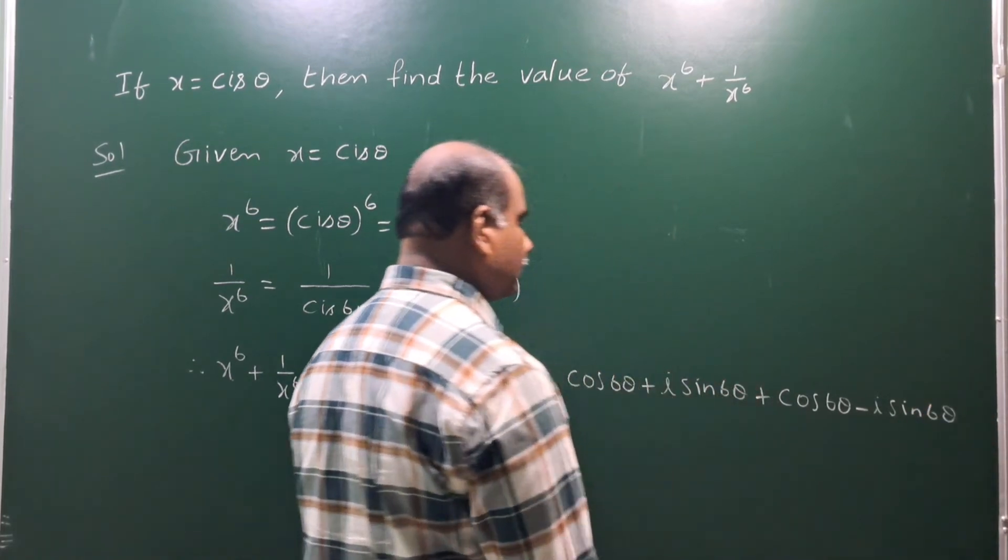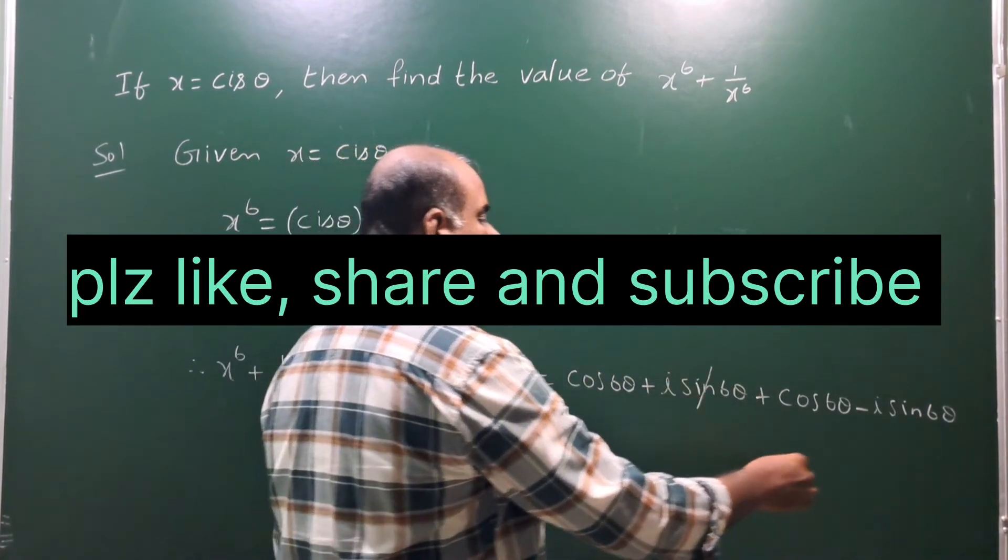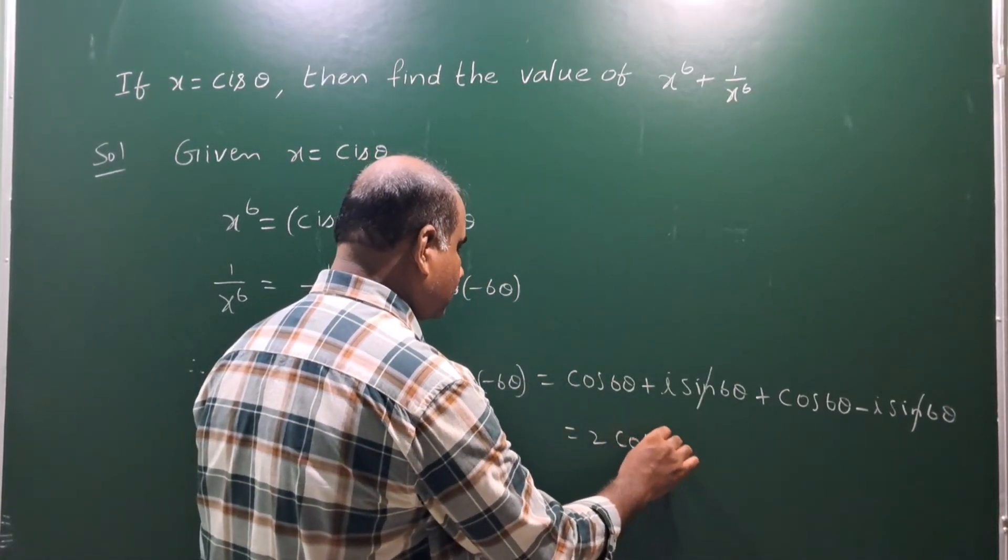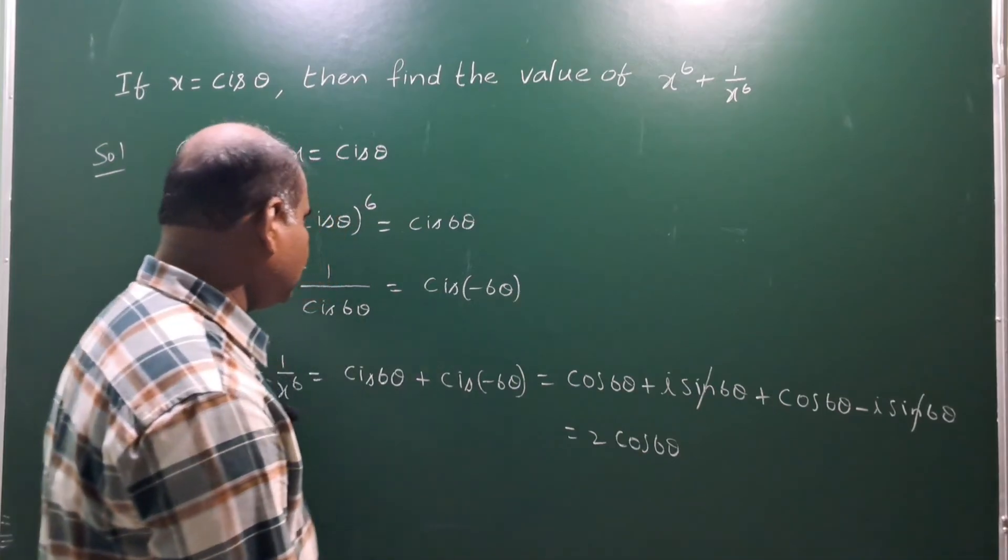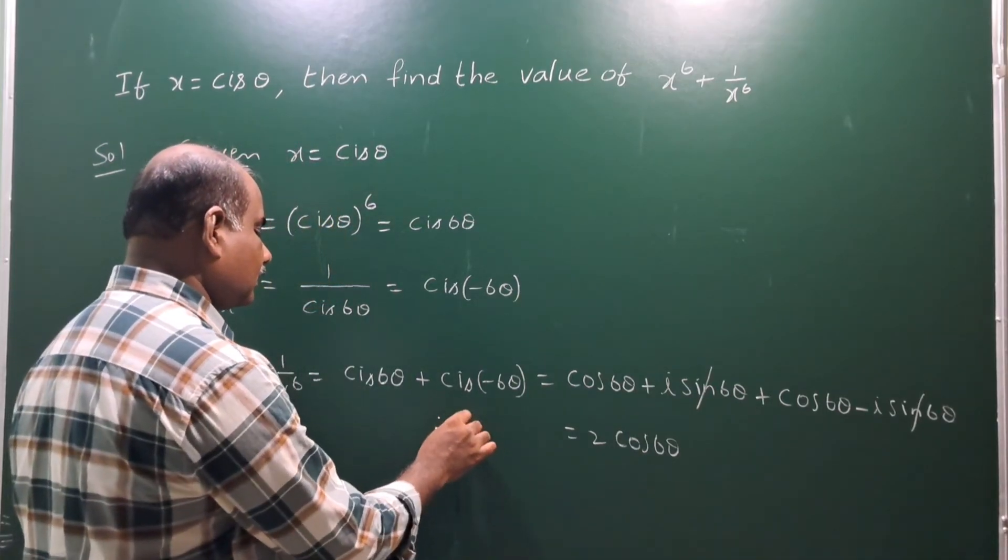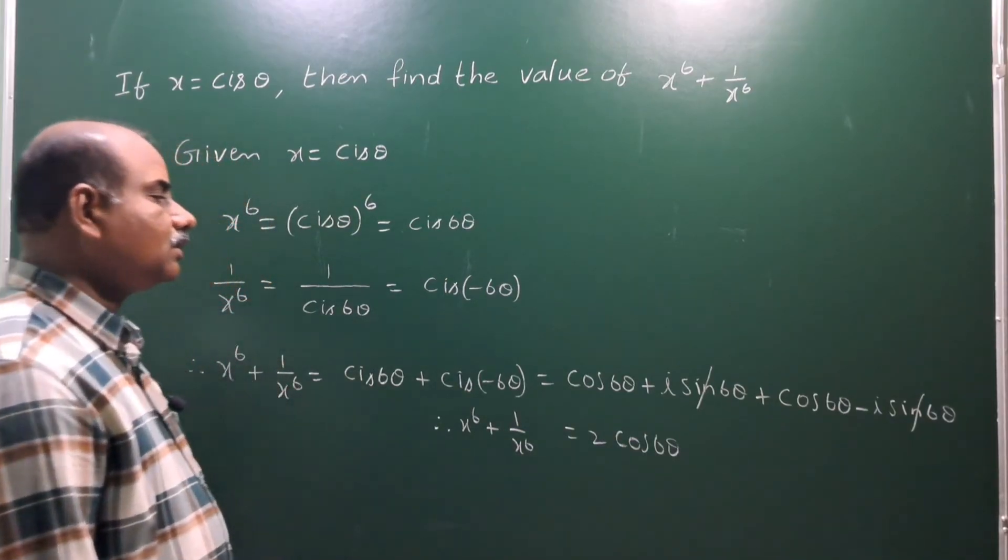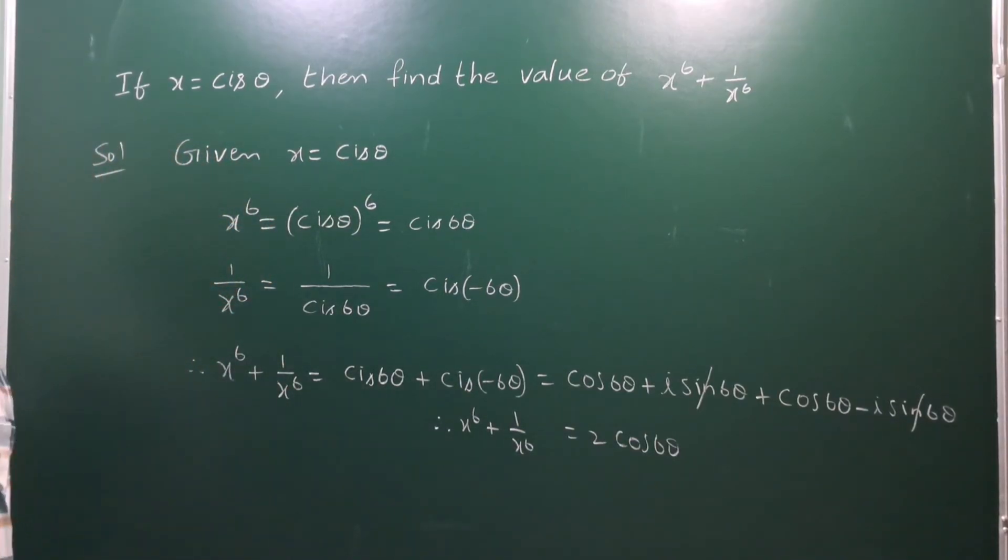So, plus i sine minus i sine cancel out, we get 2 cos 6 theta. Finally, this is our answer. Therefore, x power 6 plus 1 by x power 6 is equal to 2 cos 6 theta, that is the answer.